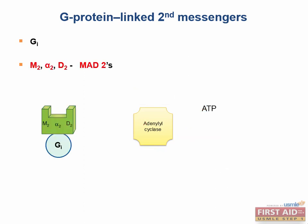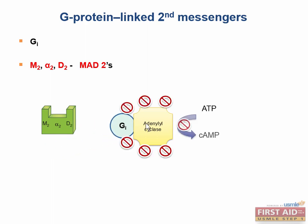M2, alpha-2, and D2 receptors all use the Gi G protein — remember this with the mnemonic 'MAD2s.' Stimulation of the Gi receptor leads to inhibition of adenylyl cyclase, causing a drop in cyclic AMP and canceling out the conversion of ATP to cyclic AMP. The decrease in cyclic AMP leads to a decrease in active protein kinase A, so it won't exert further downstream effects. Gi is inhibitory.